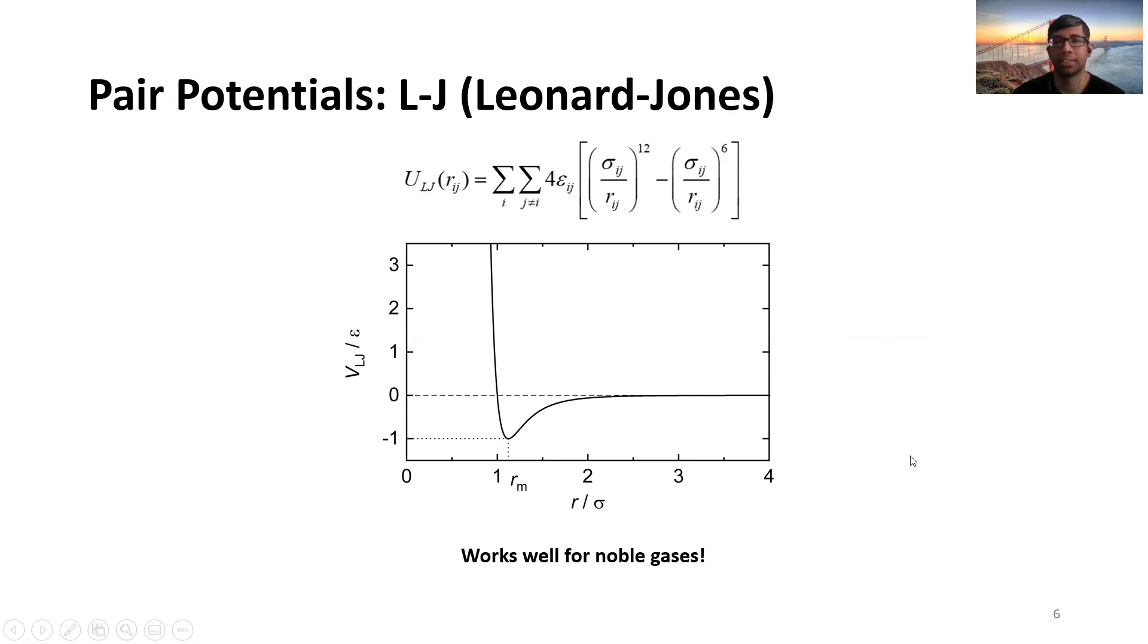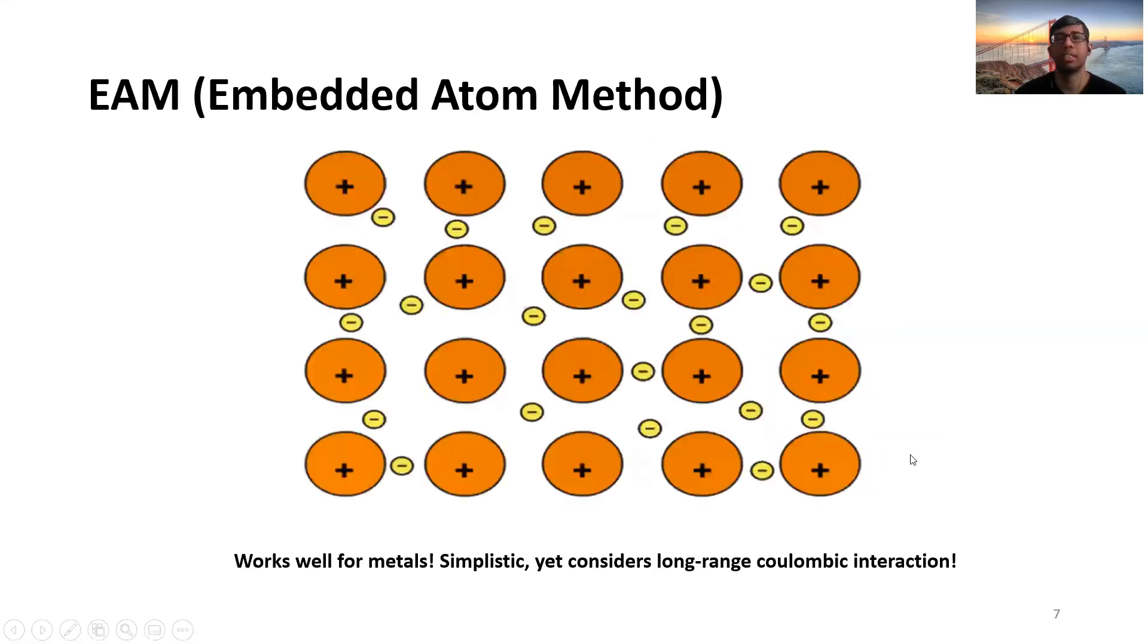If we talk about a semi-empirical embedded atom method, then it actually considers not only the interaction between two atoms, but it also considers as if the atom is immersed in a field of electric charge.